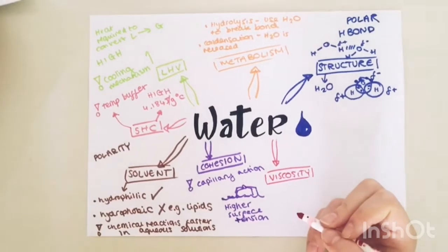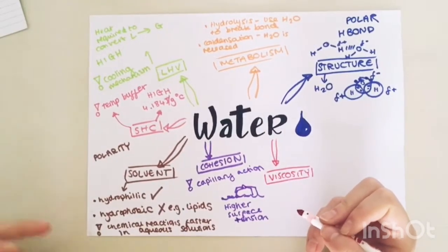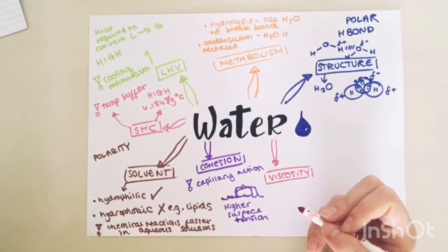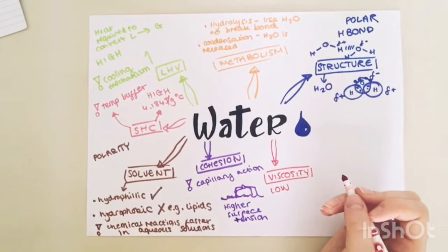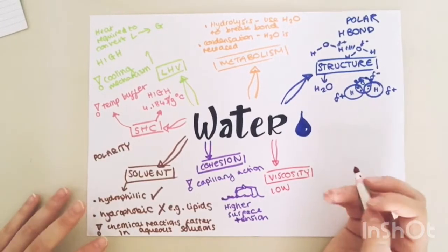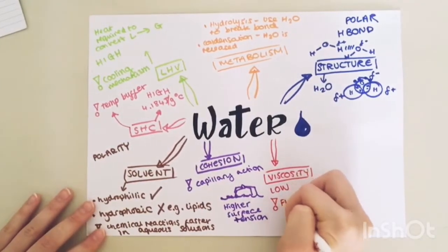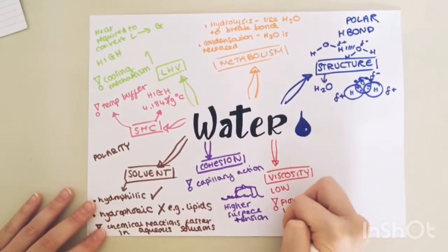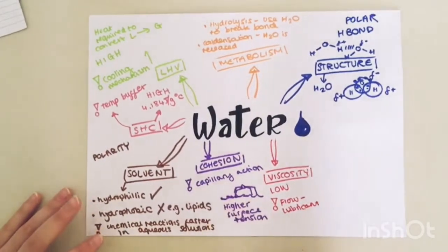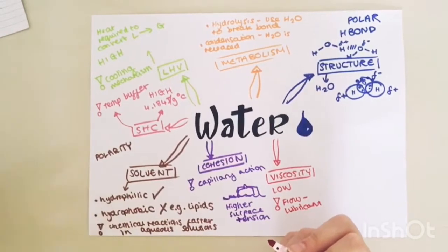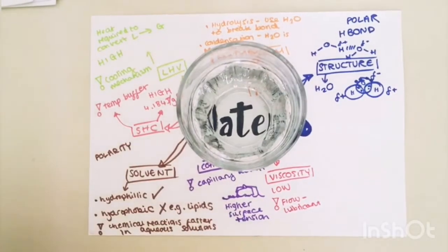Water also has a low viscosity. So viscosity is basically the thickness of a liquid, and this basically allows water molecules to easily slide past each other so water can flow easily, making it great as a lubricant, for example mucus in the digestive system or synovial fluid around the joints.